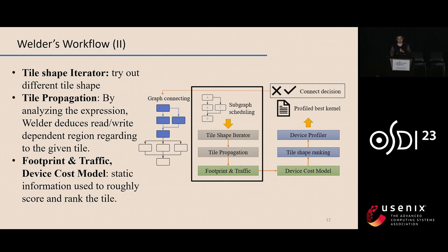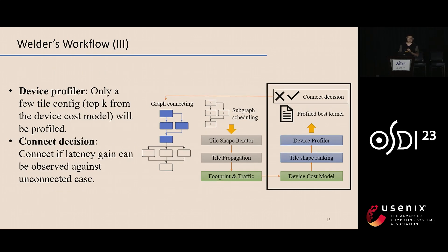After the graph connecting phase, Welder schedules the connected subgraph and assigns tile shapes to each node. The tile shape iterator tries out different tile shapes to fit the subgraph, and each tile is propagated within the subgraph. The scheduler then computes key metrics including memory footprint and traffic, which are used to score and rank tile shapes. Finally, after generating the top-K tile shapes from the device cost model, Welder's device profiler profiles these configurations to get accurate performance numbers, avoiding the need to blindly profile many kernels and keeping compilation time reasonable.